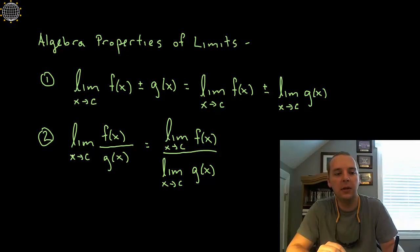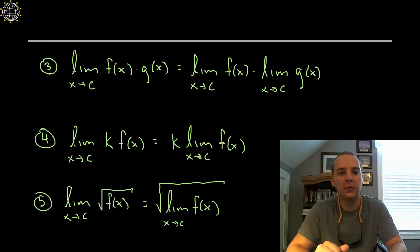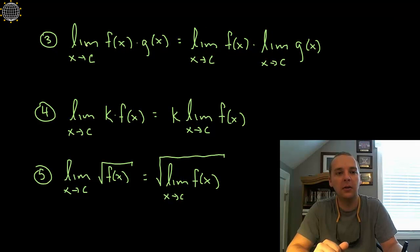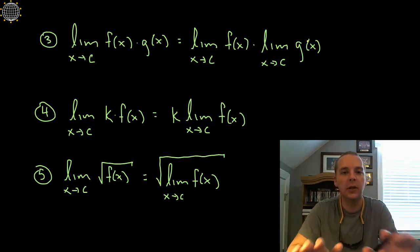Number two, the limit as x goes to c of some fraction. It says that you can simply take the limit of the numerator and the denominator separately and then divide those answers. So limits work out pretty nice when you have division. Same thing when you have a product. The limit of f times g is the limit of f times the limit of g. So if you get two different answers you just multiply those two limits together.